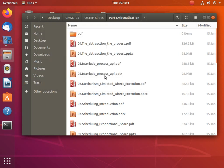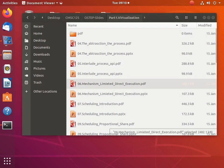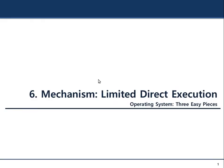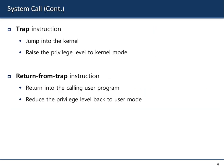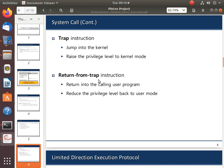We now continue. Is the process of context switching clear to everyone? The main mechanism is the trap instruction for context switching. When we say context, we refer to the state of the process.